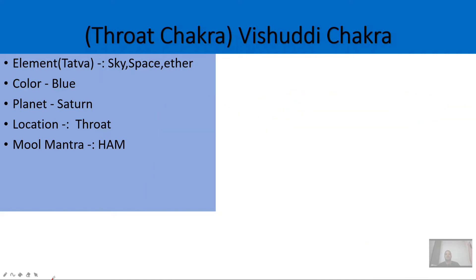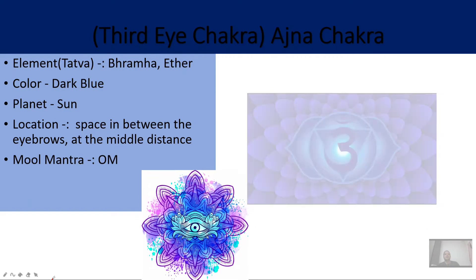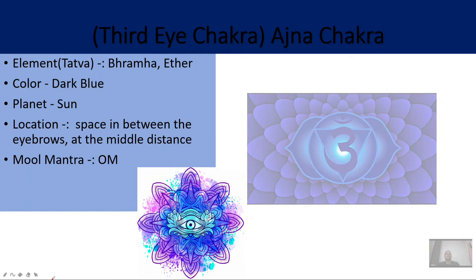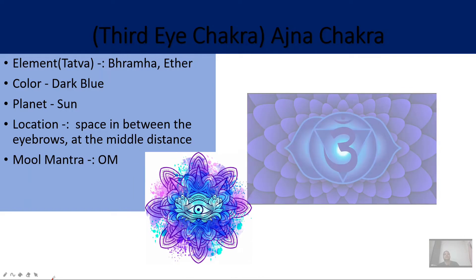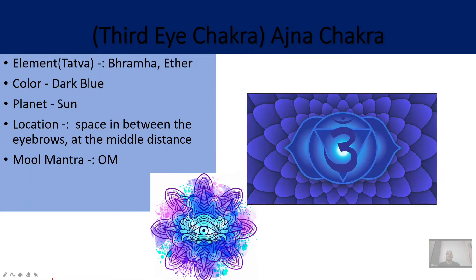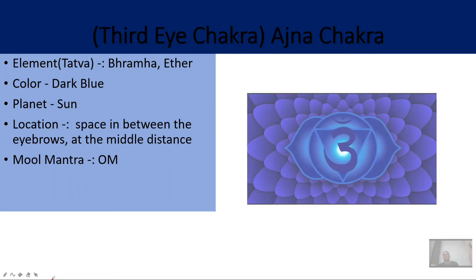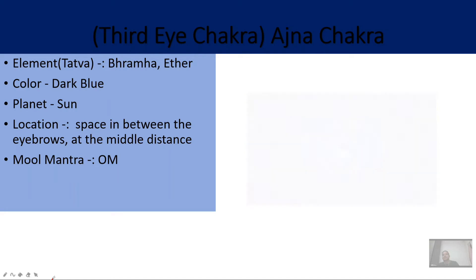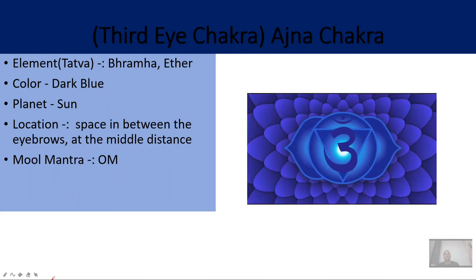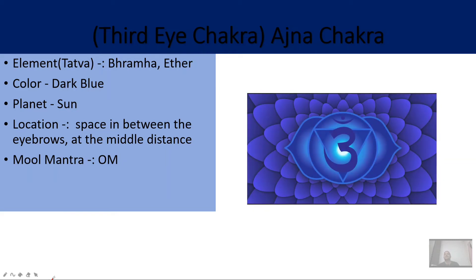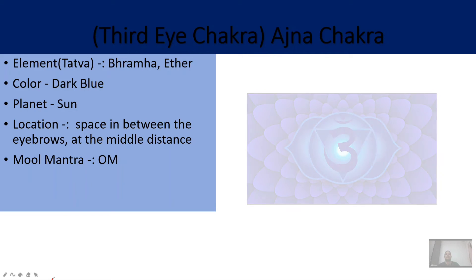The sixth chakra is the third eye chakra, located between the eyebrows at the middle. The color is dark blue, the element is Brahma or ether, and the planet is the Sun. This is a very important chakra — it is related to your nadis, and without it your soul cannot achieve purity or nirvana. It is also called the Lord Shiva chakra, because only Lord Shiva has the third eye. The mula mantra of this chakra is 'Om.'